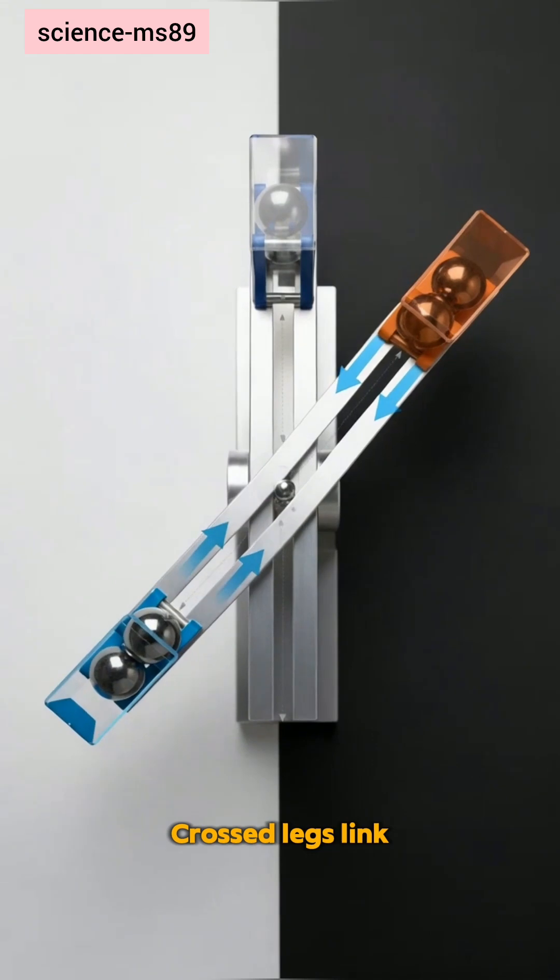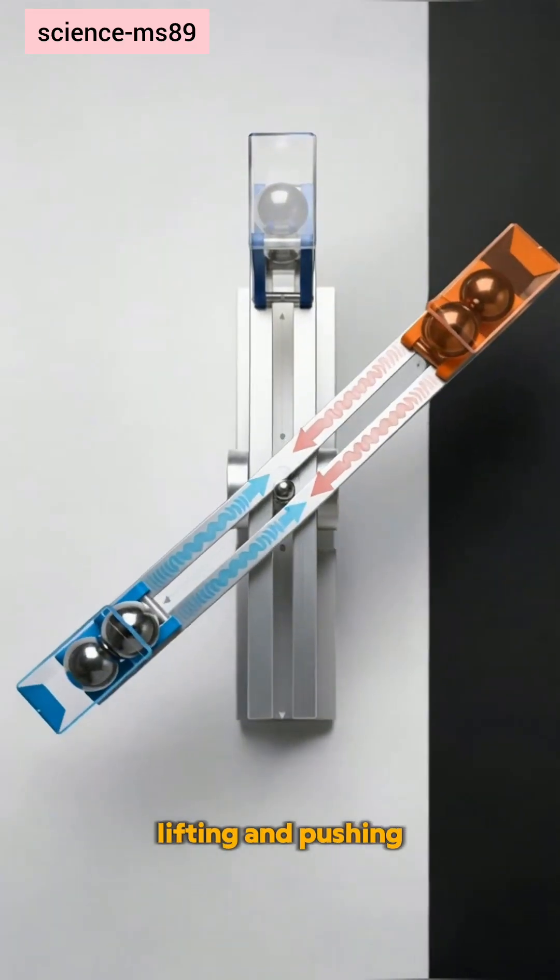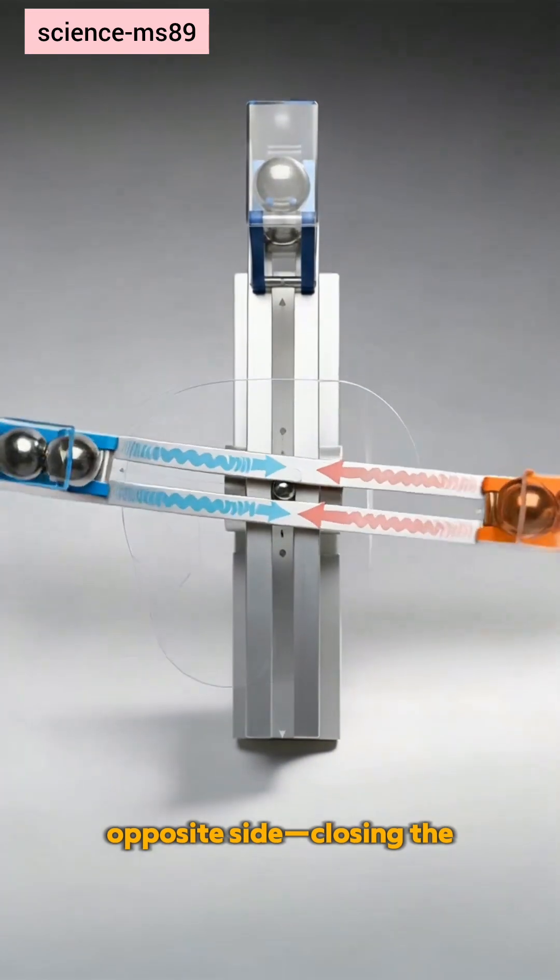Crossed legs link both sides. Downward pressure on one leg transmits through the X, lifting and pushing the opposite side, closing the feedback loop.